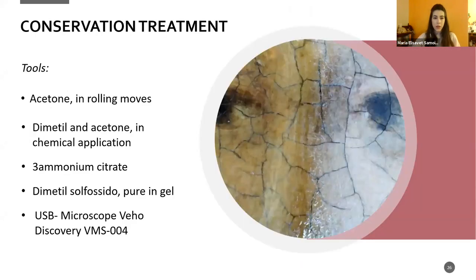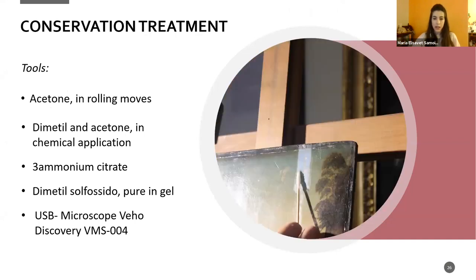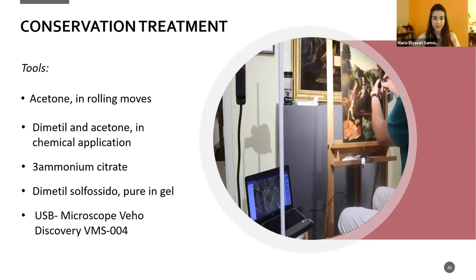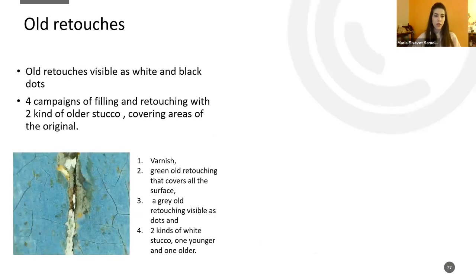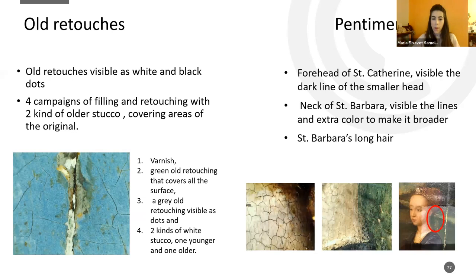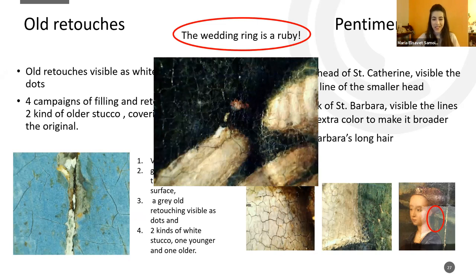Lastly, we proceeded with the conservation using different tools and techniques such as acetone and other chemicals, and a USB microscope to document the process. We again found information about old retouches, with evidence of at least four previous restorations. We also found further pentimenti revealed through conservation — including Saint Barbara's hair and head, which Isenbrant initially made larger. We also discovered with the USB microscope that the wedding ring contains a ruby.